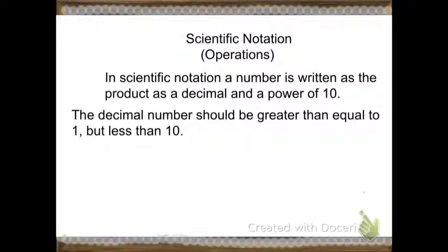Today, we're going to do scientific notations. In scientific notation, a number is written as the product of a decimal and a power of 10. The decimal number should be greater than or equal to 1, but less than 10.